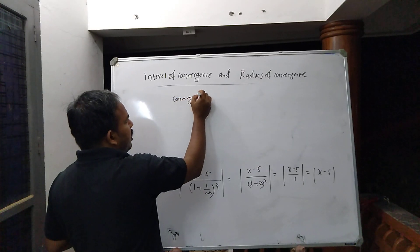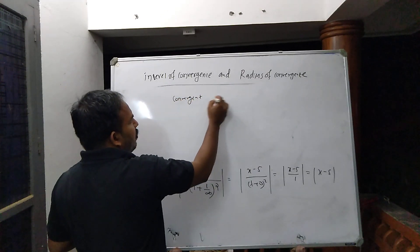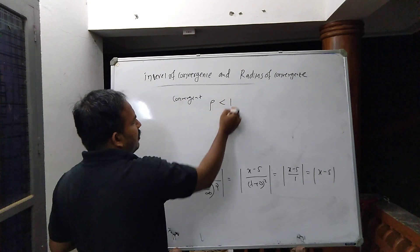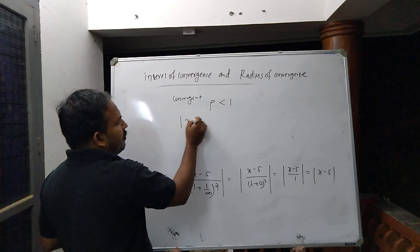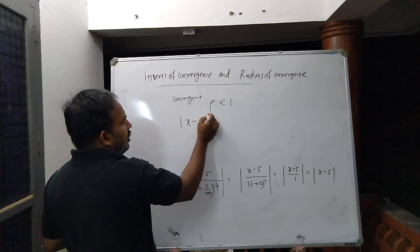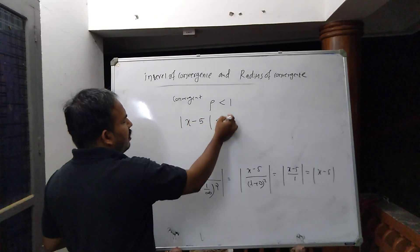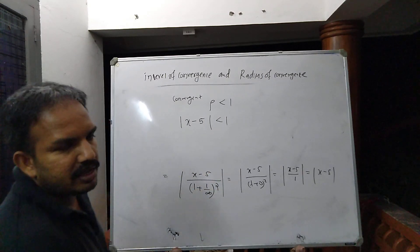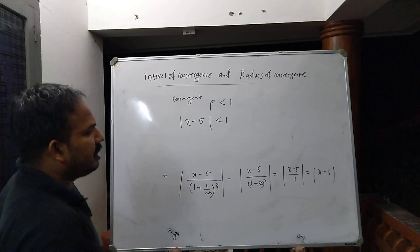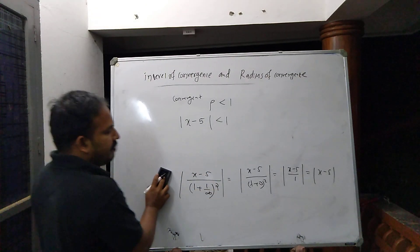For convergence, we require rho to be less than 1, meaning the absolute value of (x minus 5) must be less than 1. This is the condition under which the series is convergent.